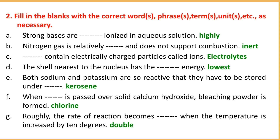Number D: The shell nearest to the nucleus has the lowest energy. Number E: Both sodium and potassium are so reactive that they have to be stored under kerosene.